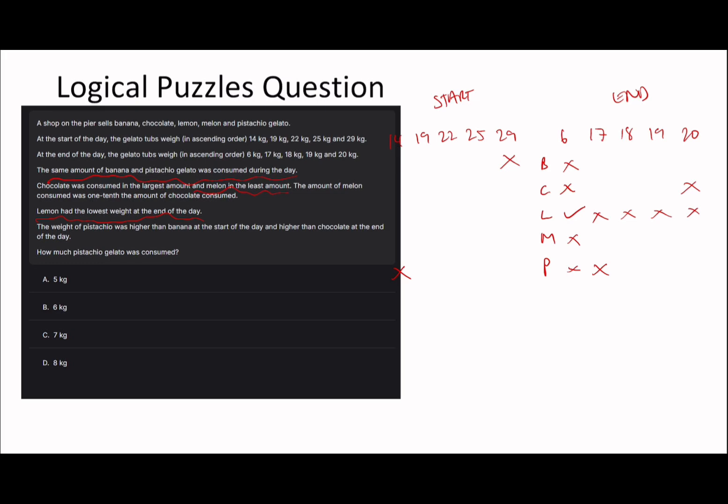Chocolate can be 17, 18, or 19 at the end, and could be 29 at the start. If it's going to be one-tenth and we've got whole kilograms here, it makes sense - for example, if chocolate was 10 kg consumed, then melon would be 1 kg. That makes sense.